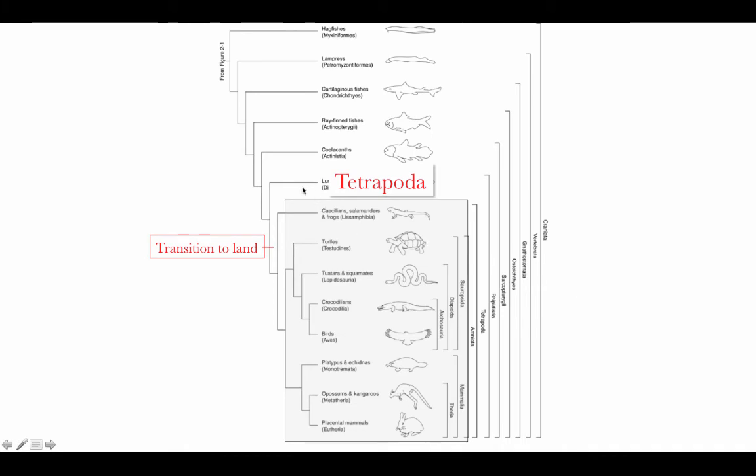So the next split from this lineage of sarcopterygians are called the tetrapods, and here we have another major transition in the history of vertebrates. The transition to land included a large number of evolutionary novelties to survive on land. You can probably imagine many of them: the importance of retaining water so that you don't dry out, the ability to hold up your body weight on the surface — you don't have water supporting your body weight anymore — you need strong limbs to be able to push your belly up off the surface.